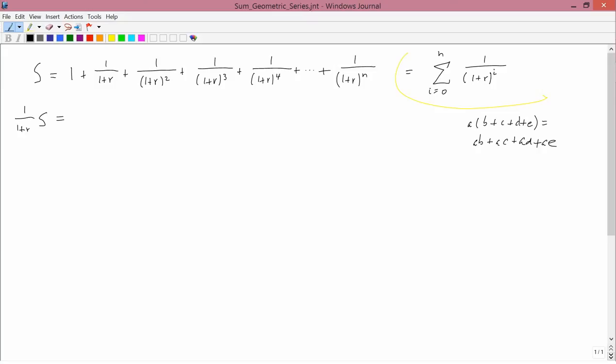The first term on the right-hand side is 1, so when that gets multiplied by 1 over 1 plus R, it just becomes 1 over 1 plus R. The second term is 1 over 1 plus R, so we multiply that by 1 over 1 plus R and get 1 over 1 plus R squared. The third term becomes 1 over 1 plus R cubed. The fourth term, 1 over 1 plus R to the fourth, the fifth one, 1 over 1 plus R to the fifth, and the last one becomes 1 over 1 plus R to the N plus 1.